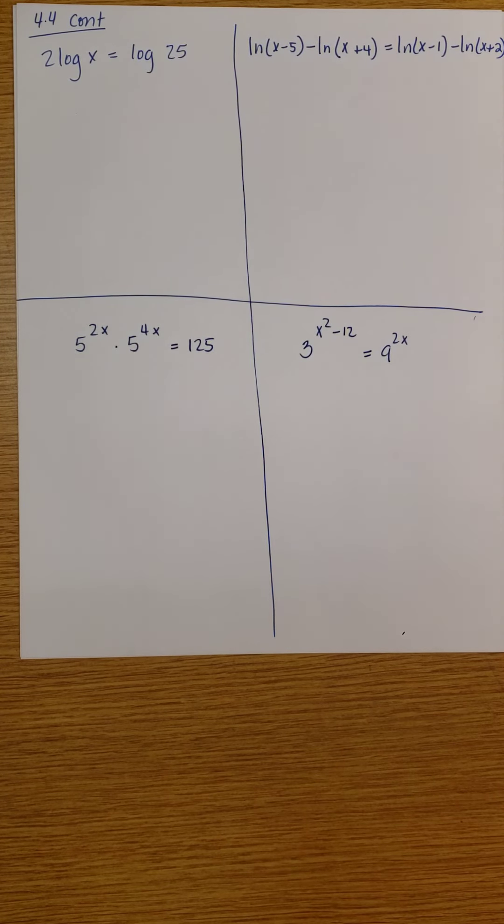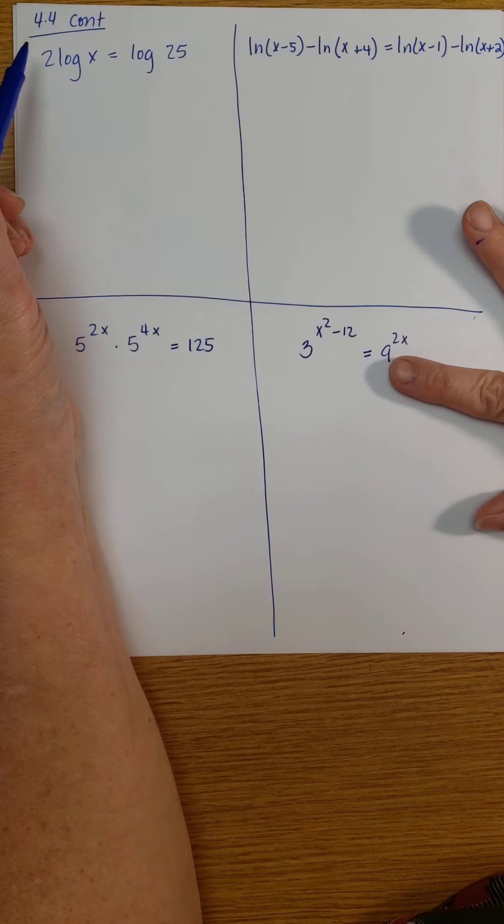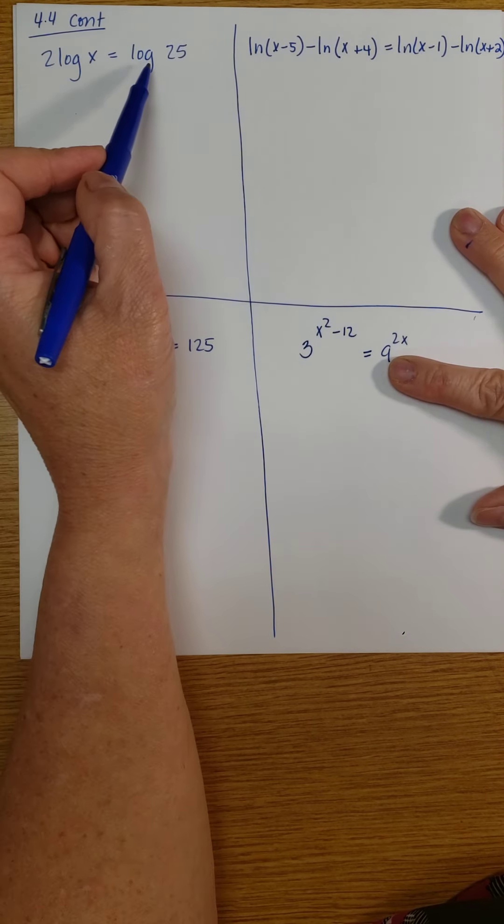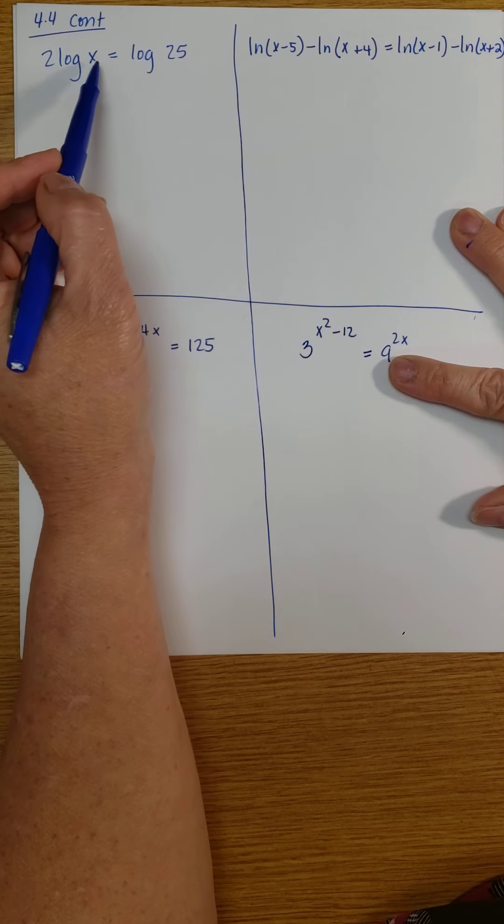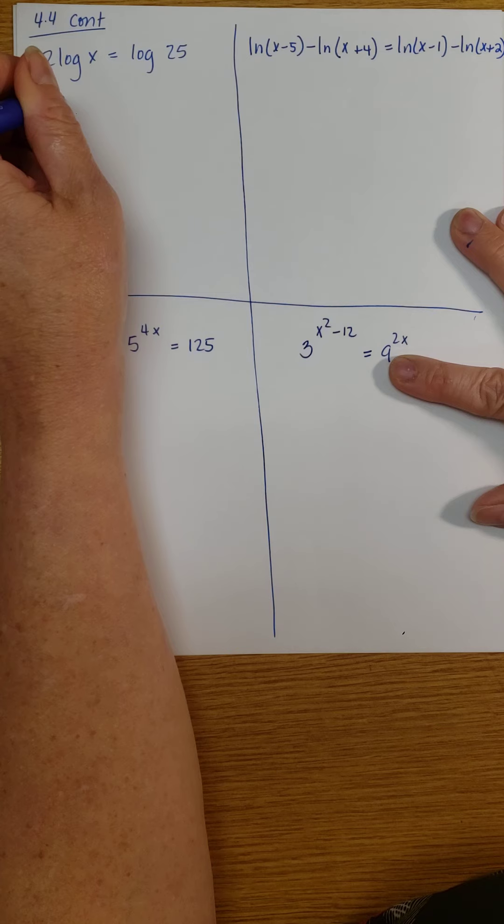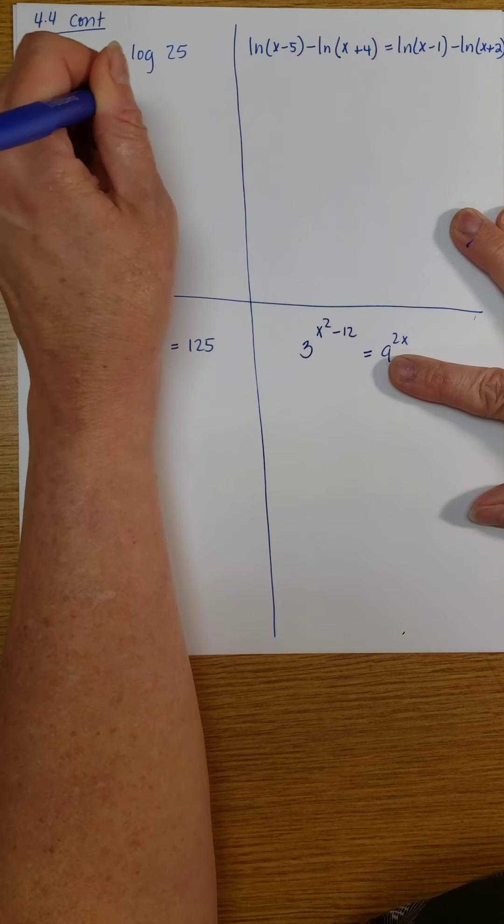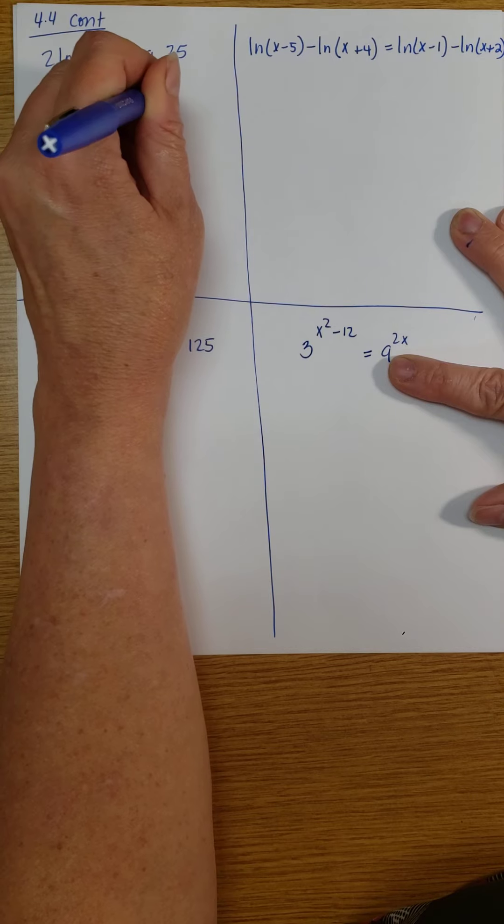More examples of solving equations with either logs or exponents, exponential expressions. So here we have 2 log x equals log 25. I want to condense this right here. So using the power rule,